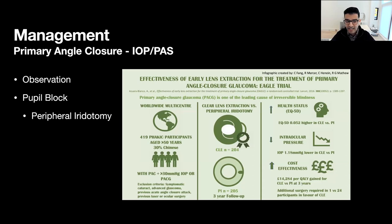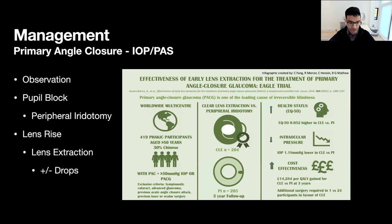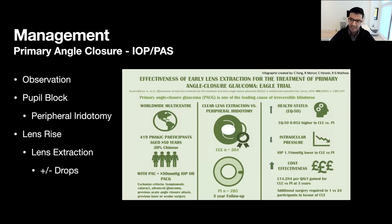An important note: completing peripheral iridotomy in a patient with PAS is not going to open or remove existing scar tissue. However, the hope is that by equilibrating the dynamics in the anterior chamber relative to the sulcus space, you can still help open the remaining areas that are not scarred down. Patients with lens rise are more challenging. If they have a pupil block component, definitely consider a PI. However, jumping straight to lens extraction for a patient with, say, a pressure of just 22 mmHg still seems a little bit aggressive.